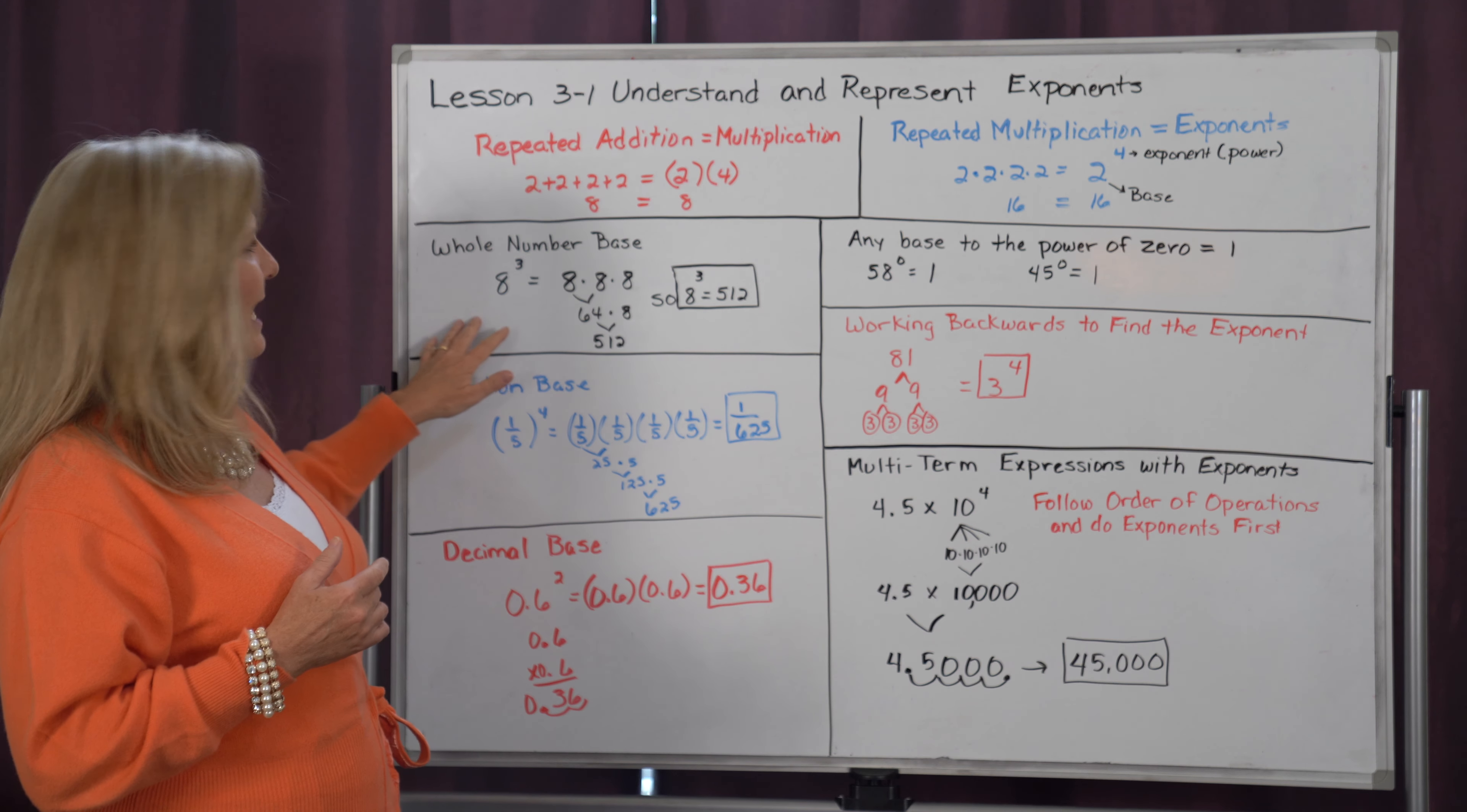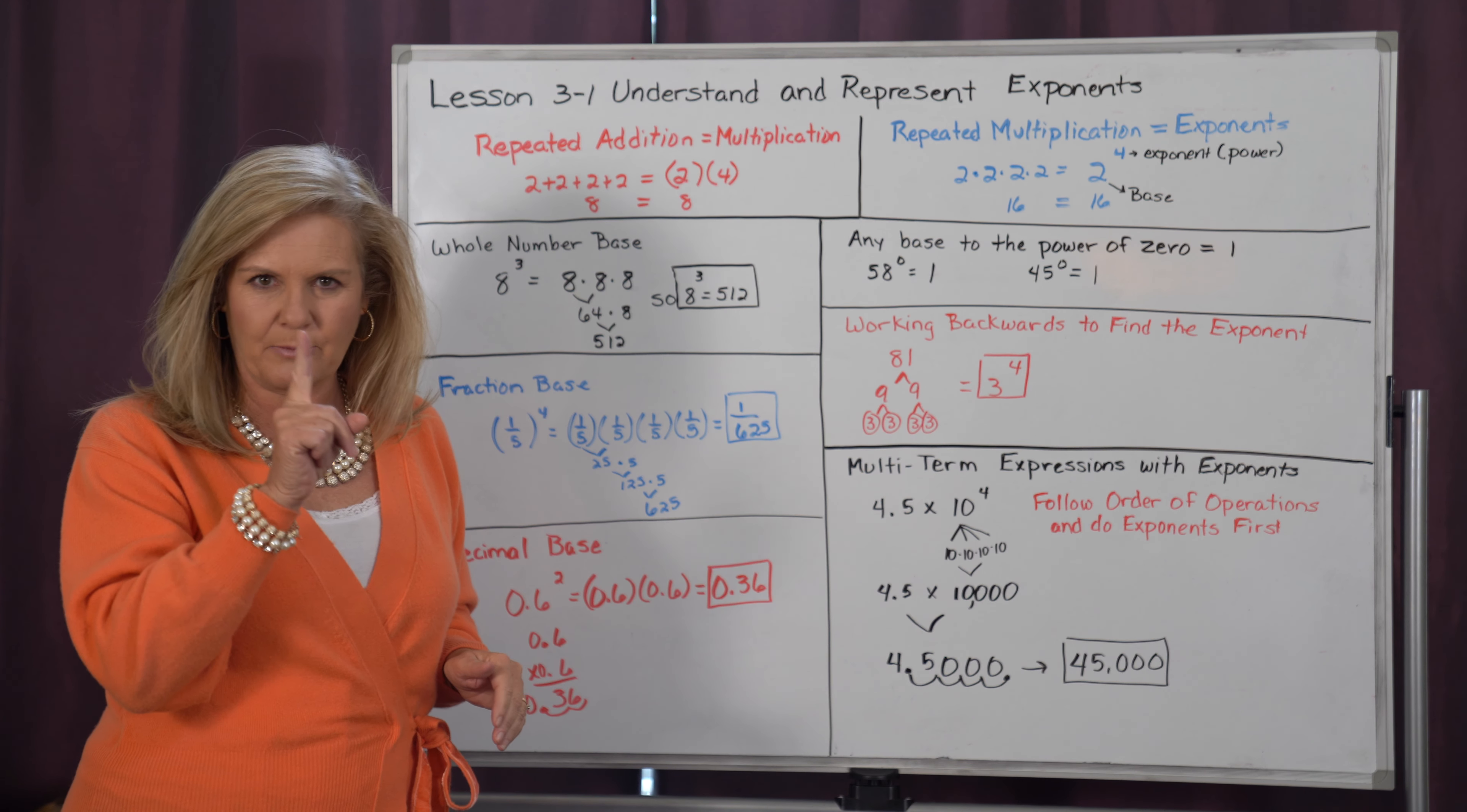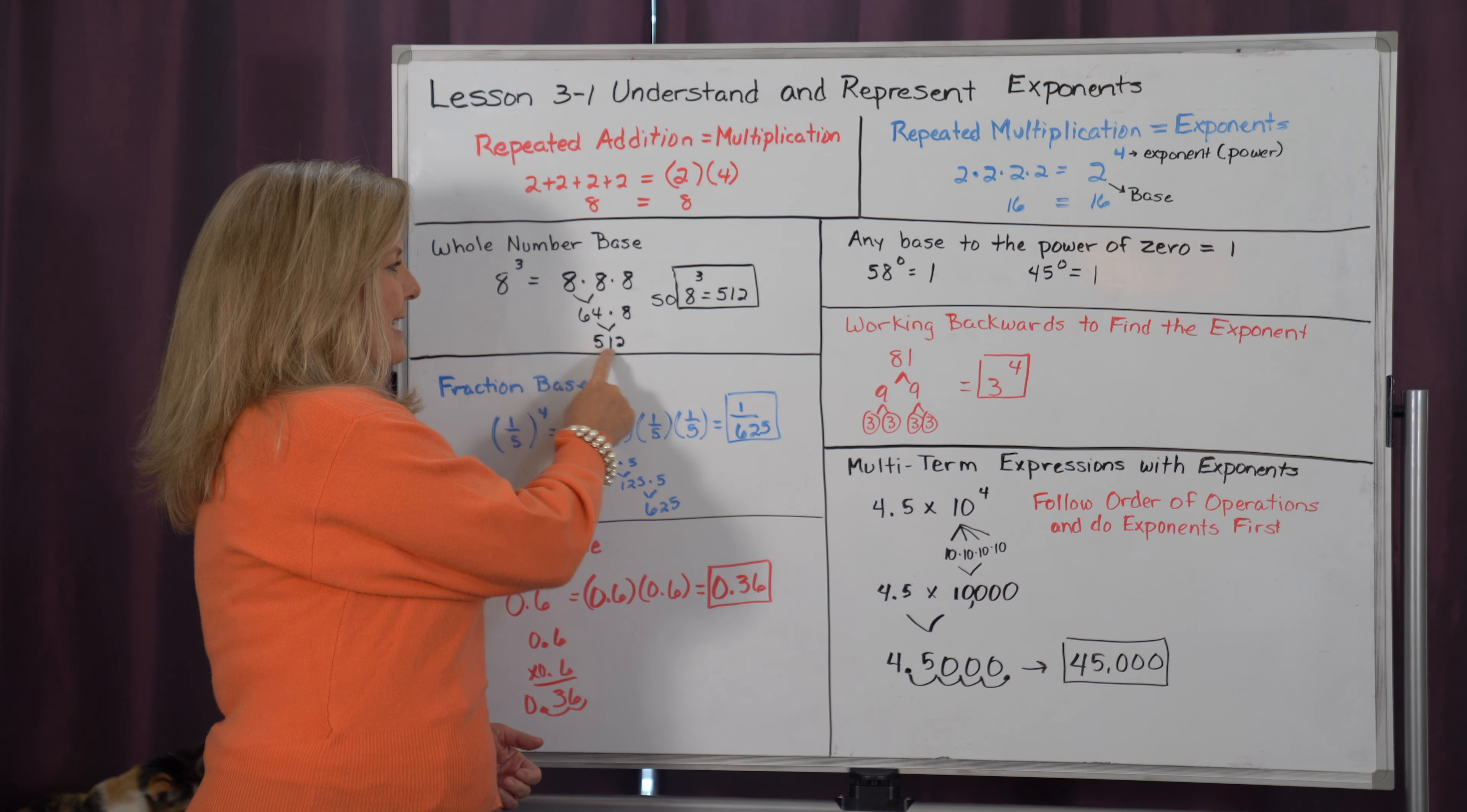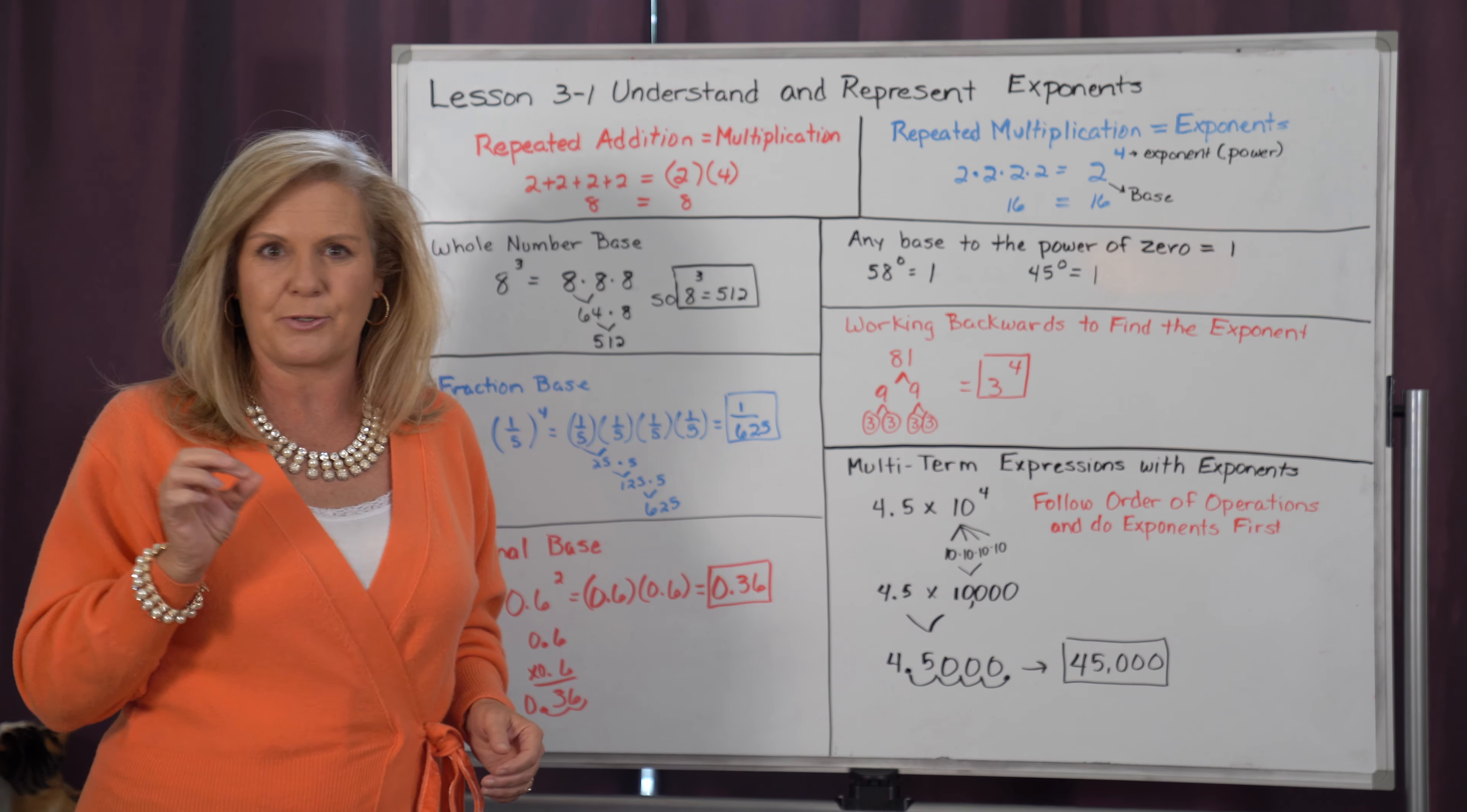Specifically, if we take a look at a whole number example, that's the easiest for us to do. So if we had 8 to the 3rd power, we would say that's 8 times 8 times 8, because it's repeated multiplication. If I go to solve this, I'm going to do the first 2 eights first. So 8 times 8 is 64. Then 64 times 8 is 512. So if we evaluate 8 to the 3rd power, it equals 512. Notice our answers get enormous in a very short amount of time.